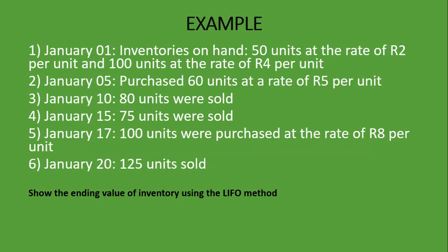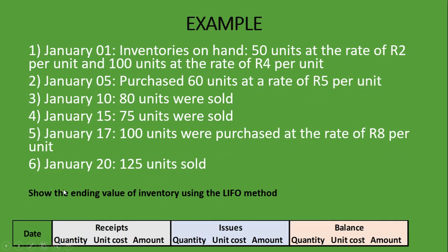Here's an example showing the transactions that happened in January, and it asks us to show the ending value of inventory using the last in first out method. Here's a very important table to draw. We have date, receipts, issues, and balances, and under each we have quantity, unit cost, and amount. This table will help you simplify your work and document the movement of inventory very easily.